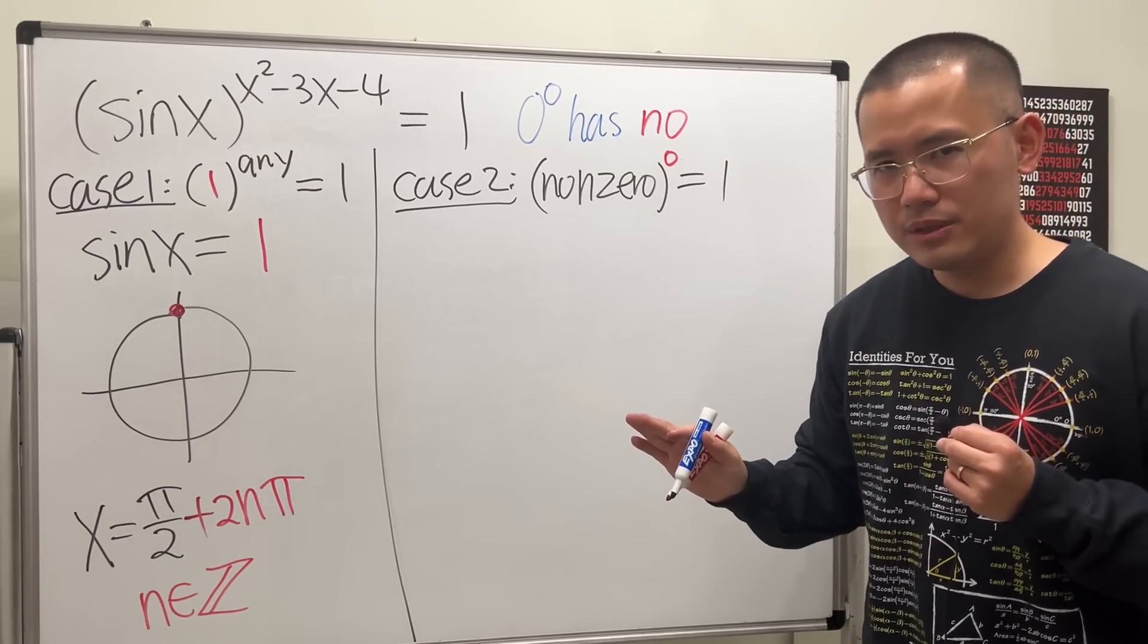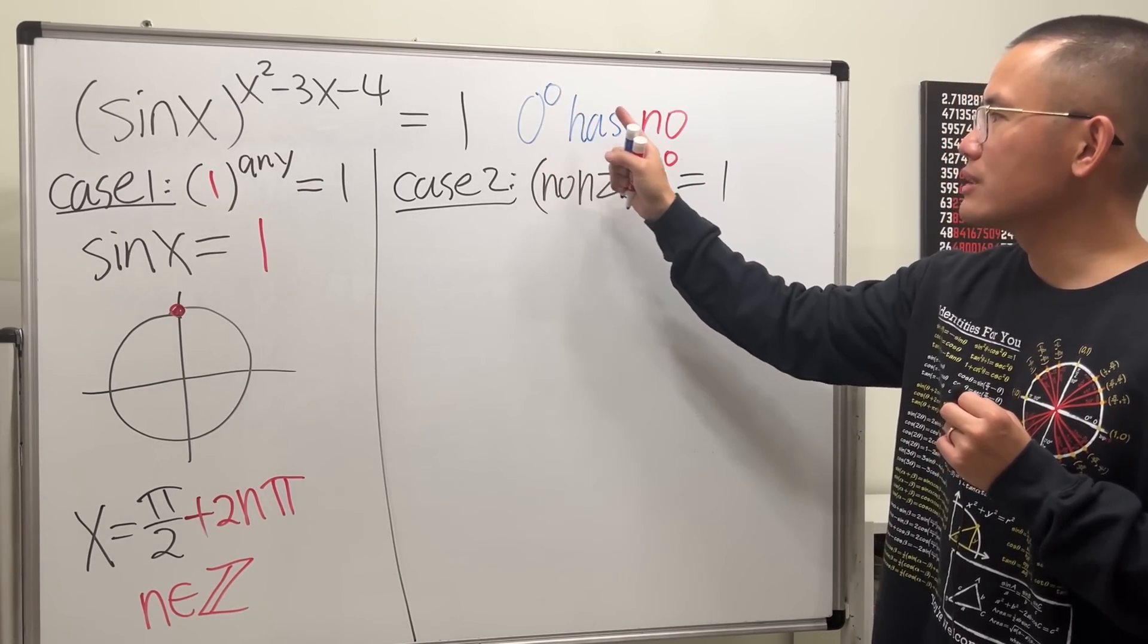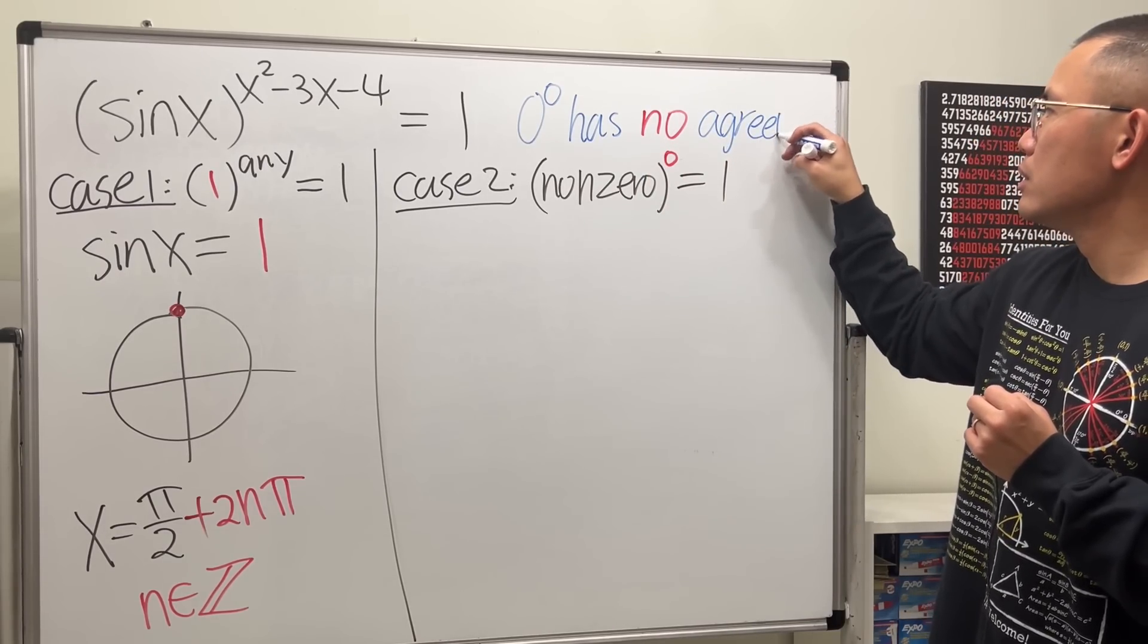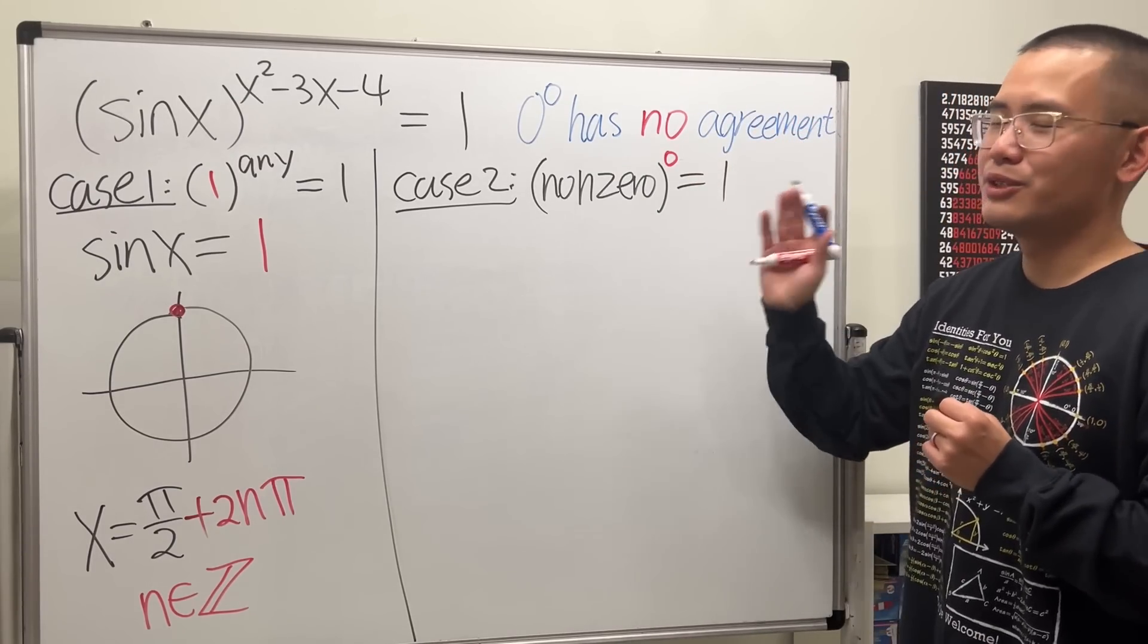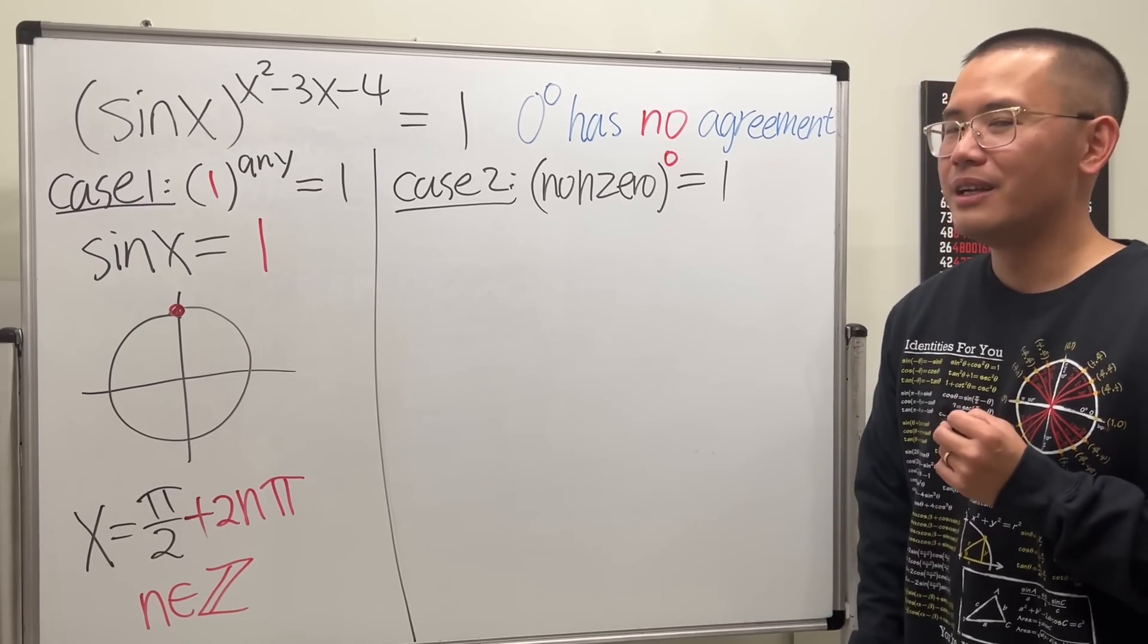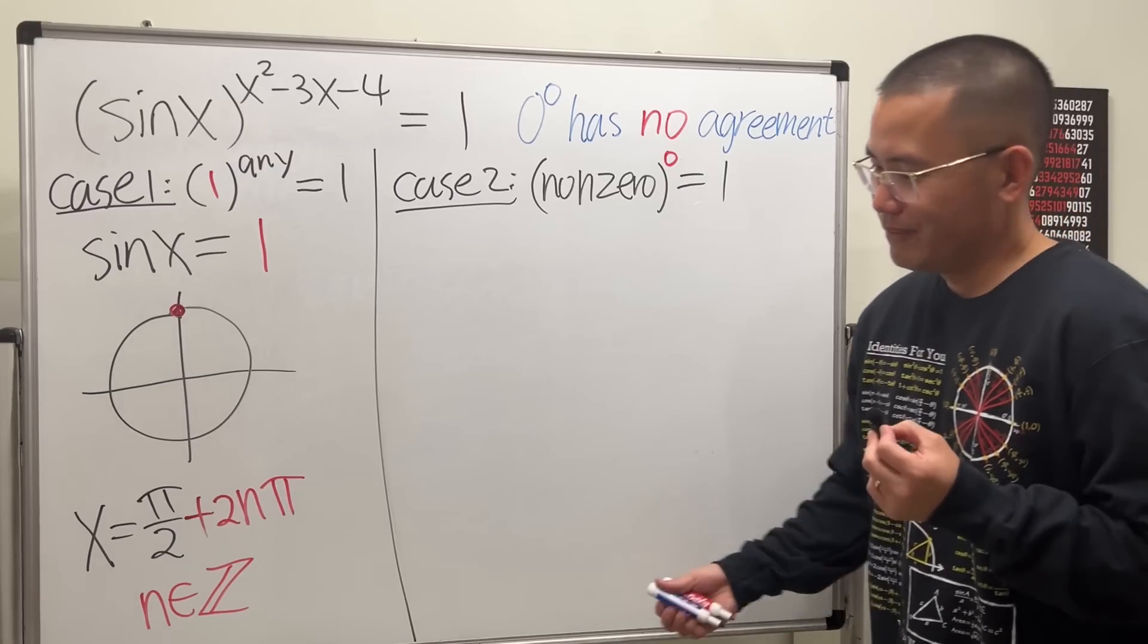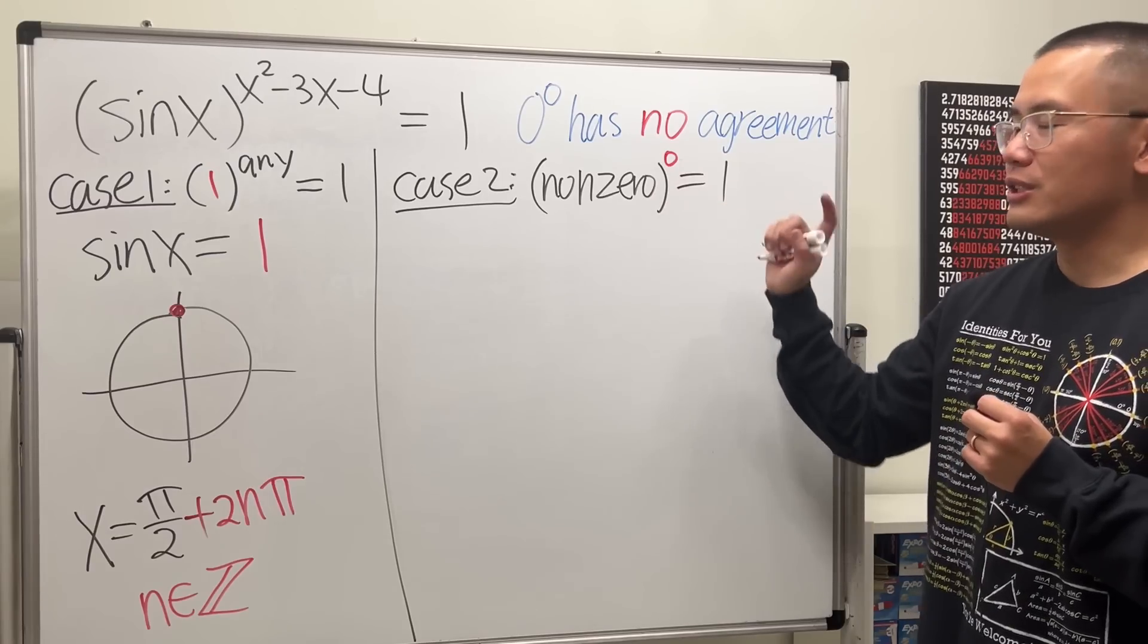It's not no solutions, worse than that. Zero to the zero has no agreement. So I'm not going to touch on this at all. Some people say this right here should be undefined, meaning no answer. But some other people will say zero to zero should be 1. No, I'm not going to deal with this.